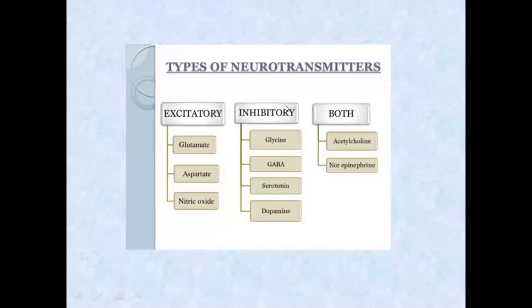Inhibitory neurotransmitters include glycine, GABA, serotonin, and dopamine. Both acetylcholine and norepinephrine can be excitatory or inhibitory. You have to remember which are excitatory, which are inhibitory, and which are both. This chart is very important.